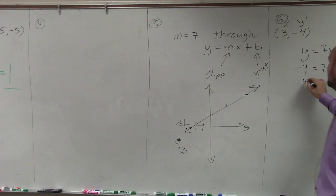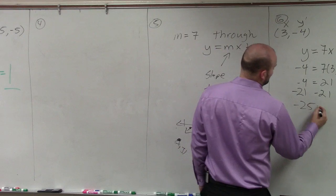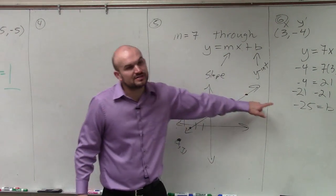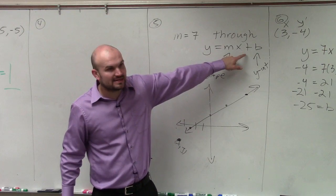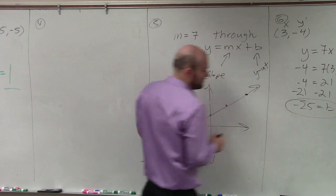7 times 3 is 21. So I have negative 4 equals 21 plus b. And then I subtract 21 and I get negative 25 equals b. That means now my y-intercept is going to be at negative 25, meaning the graph is going to cross at negative 25.